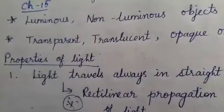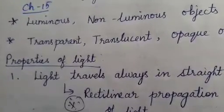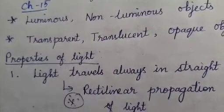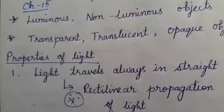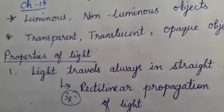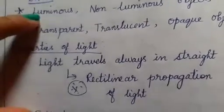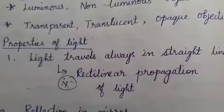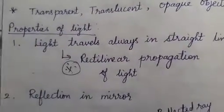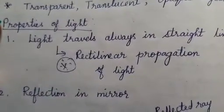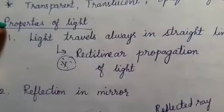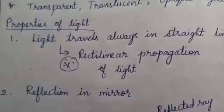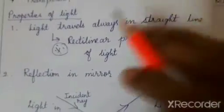Good morning children, today we are moving to a new chapter in physics — Chapter 15: Light. Last year in Grade 6 you learnt about light and shadows. We saw how materials are classified based on light as luminous and non-luminous objects, and as transparent, translucent, and opaque objects. So you have already learnt the properties of light, but this year you will have a more detailed explanation.